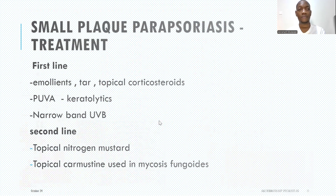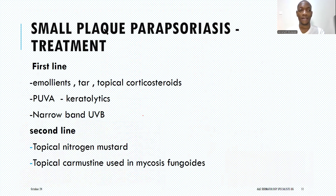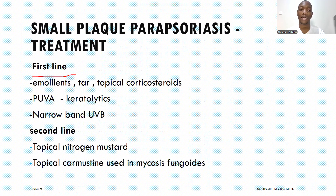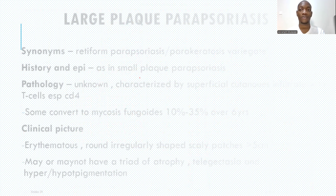When treating small plaque parasoriasis, first-line treatment includes emollients such as moisturizers, topical corticosteroids, and phototherapy — either PUVA (psoralen with UVA) or narrowband UVB. Keratolytic agents such as urea or salicylic acid can also be used. If someone fails first-line treatment, second-line options include topical nitrogen mustard such as carmustine. Carmustine is usually used in the treatment of mycosis fungoides, but for persistent small plaque parasoriasis it can also be used.